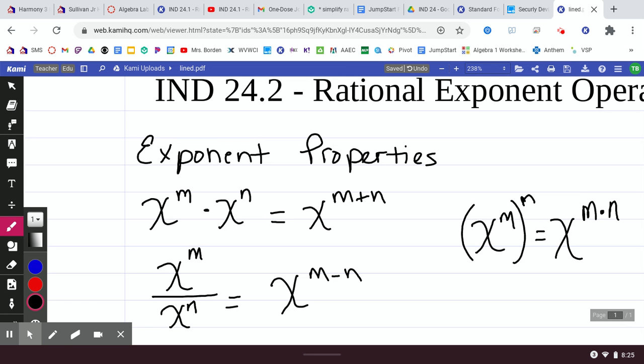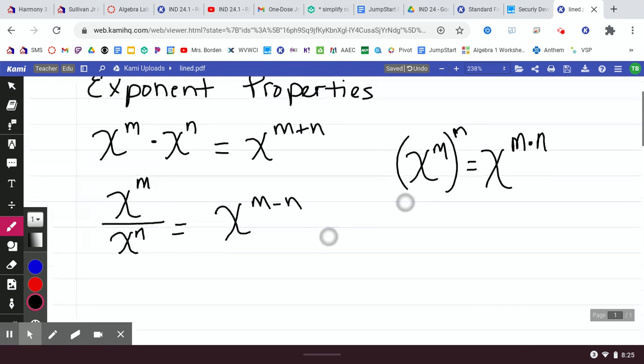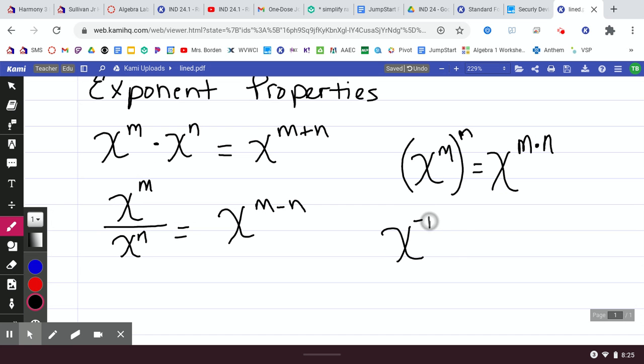And the last thing that you needed to remember when we dealt with properties of exponents is if you had x to the negative m, how did you deal with that negative exponent? Flipped it. Really, we know that every value is over one. And so when you flip it, the one goes on top and the whole x to the m drops to the bottom and you drop the negative. So, those are the four things that should be review that we're going to use in today's.